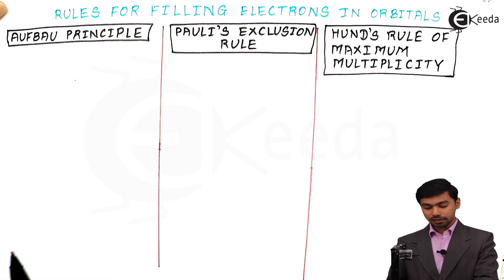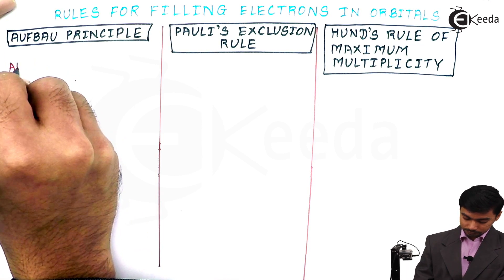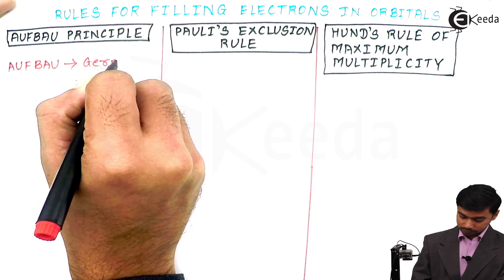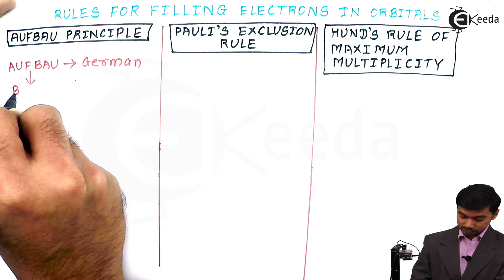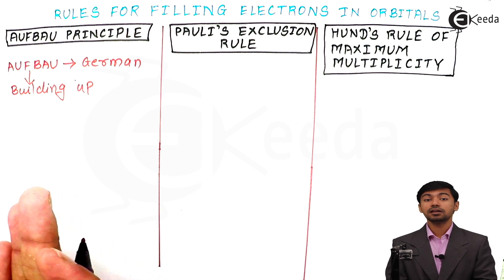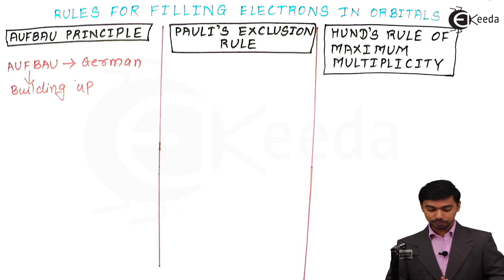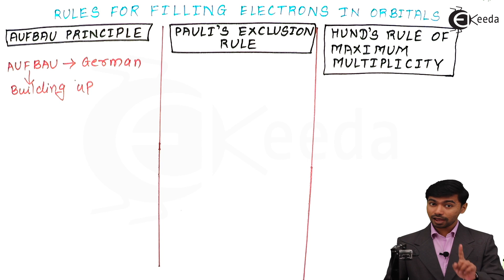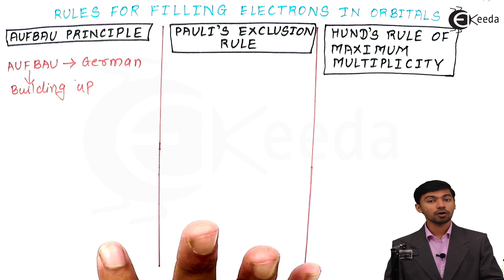Now let us see these one by one. The first one is the Aufbau principle. Aufbau is a German language word meaning 'building up' in English. So we are going to build something in an upward direction — specifically, we are going to build a pyramid according to this principle. That pyramid is the fundamental part for everyone to understand how to fill electrons in orbitals. Let us see the procedure for building up this pyramid first.